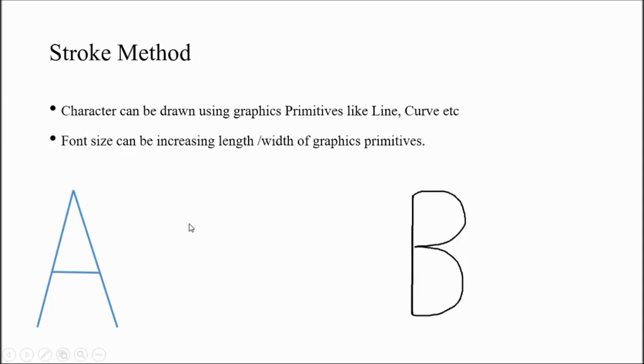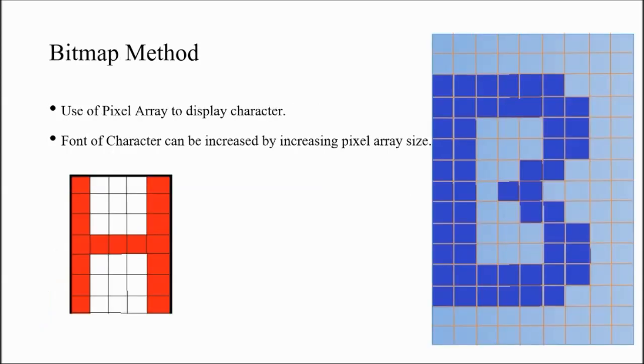In this method, it is easy to increase the length or width. But the problem in stroke method is you can represent characters with a specific structure. In case of bitmap method, as per your requirement, you can change the pixel display so the character will be displayed in various types, fonts, or styles. So the mostly used method is bitmap method.